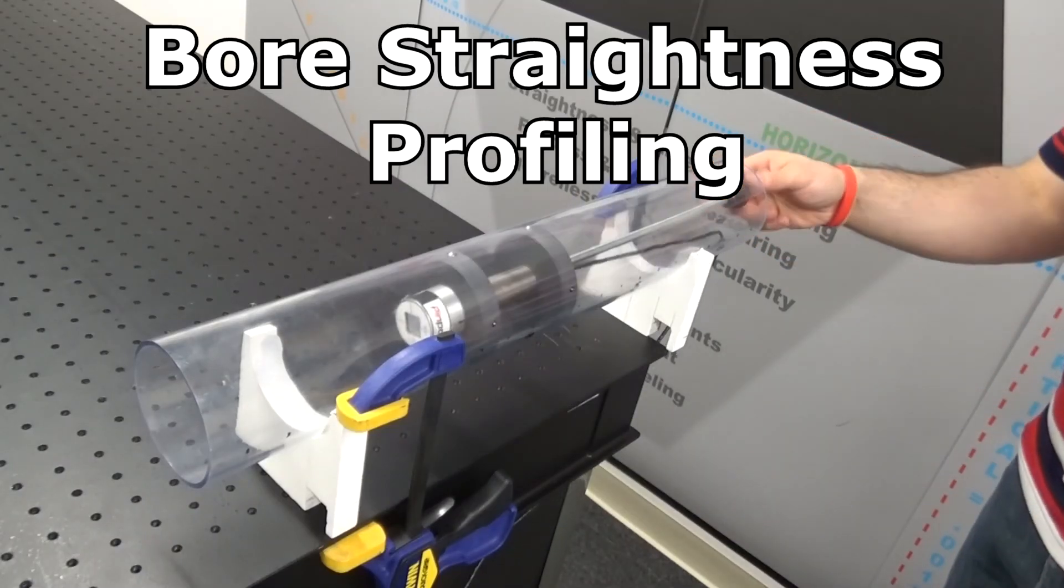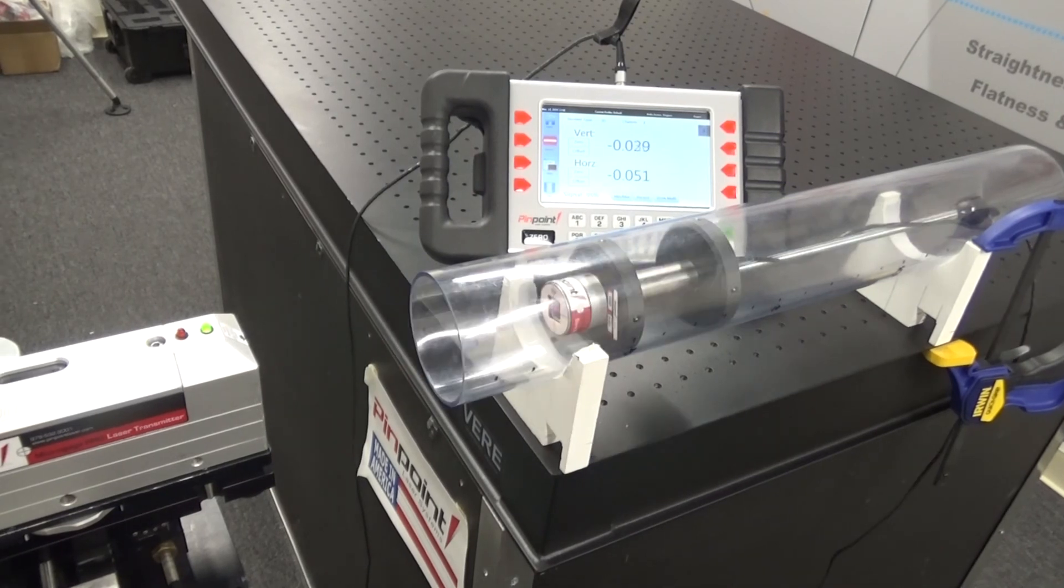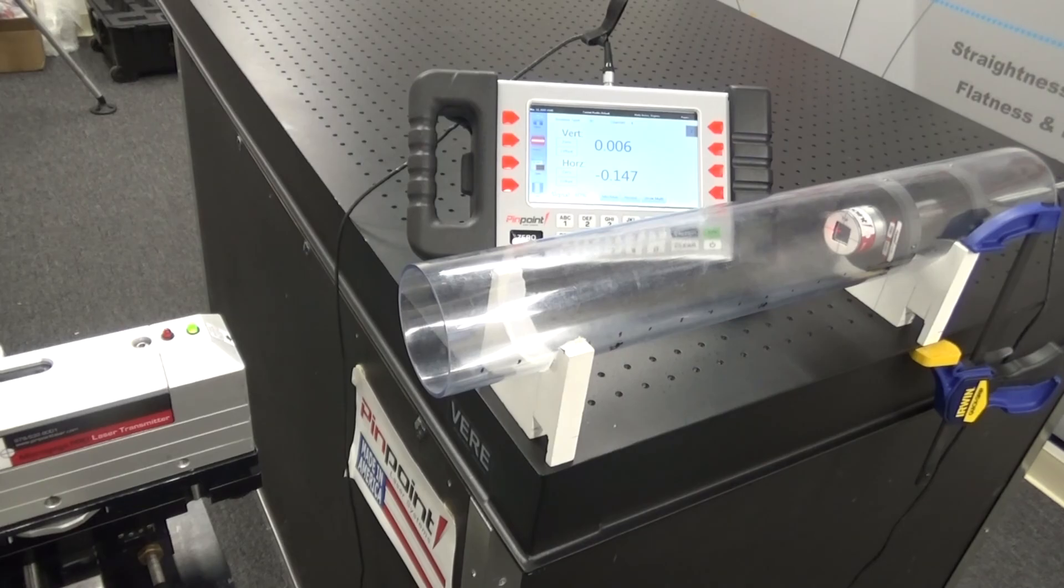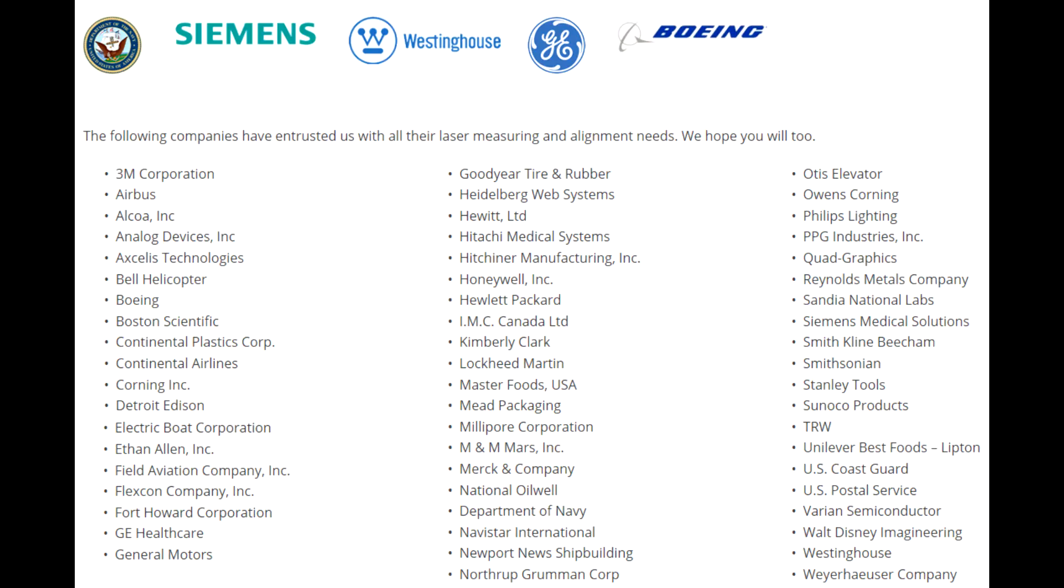The Pinpoint micro-gauge system can also profile the straightness of a long bore. Here we can buck in again to a front and back location, or we can use Capture to interpolate and calculate straightness and skip bucking in. Thank you for watching.